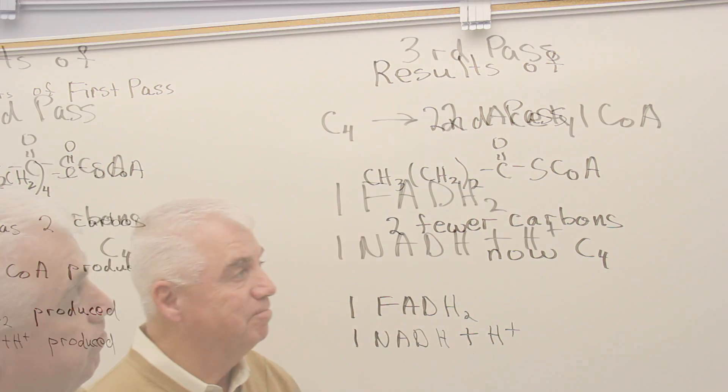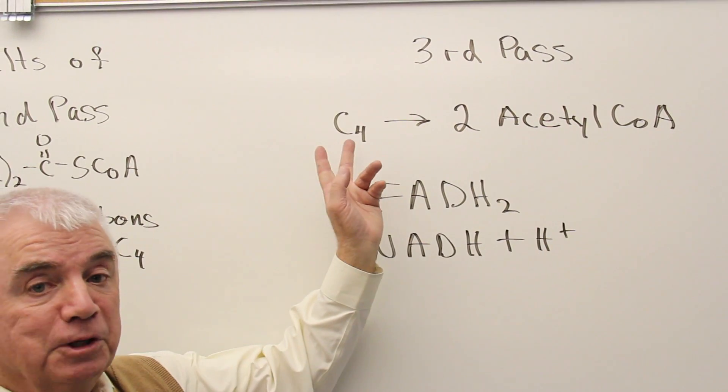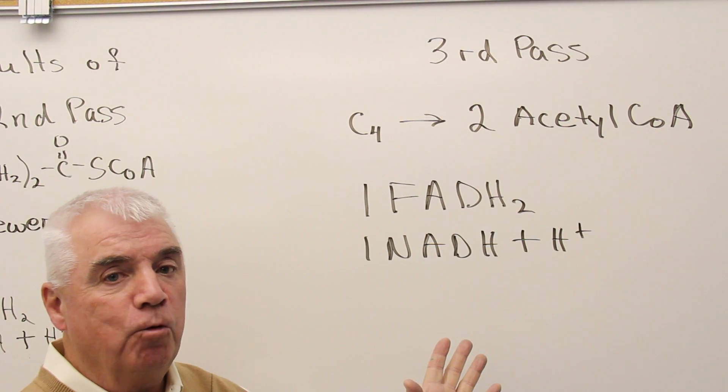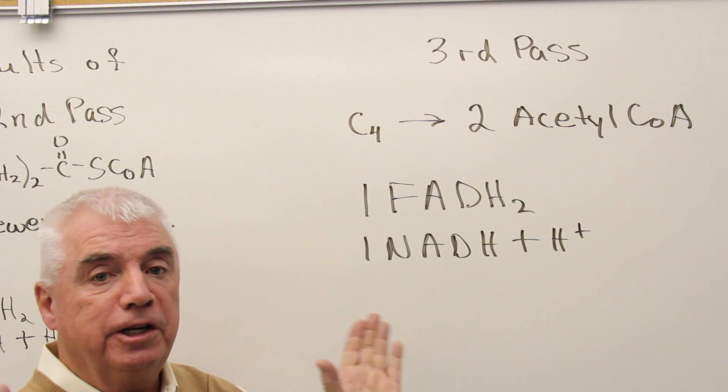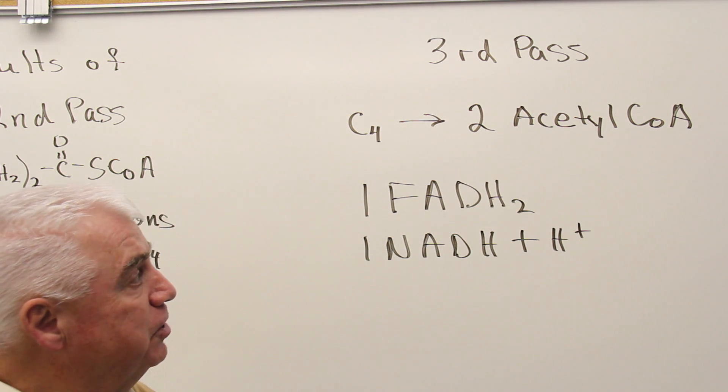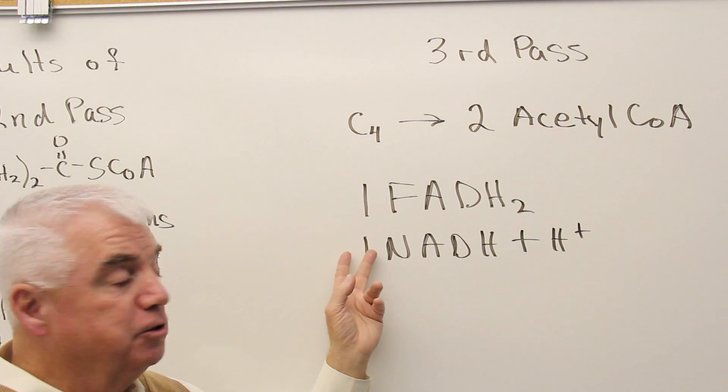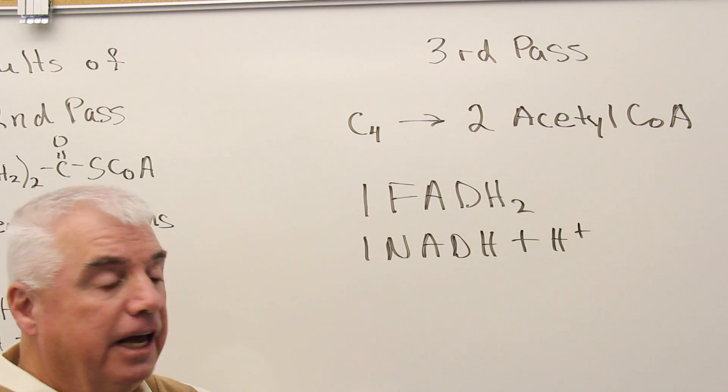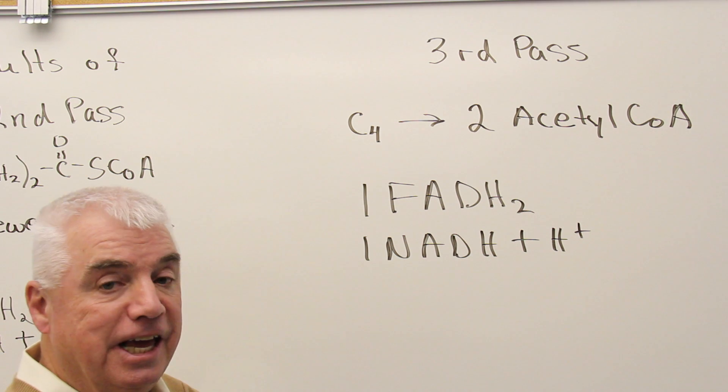Let's look at the third pass. Well, we went from a C8 to a C6 to a C4, and now as a C4 is broken apart, we're going to get two units of acetyl CoA. We had to go through the series of four reactions to accomplish that. Let's get another FADH2 and another NADH.